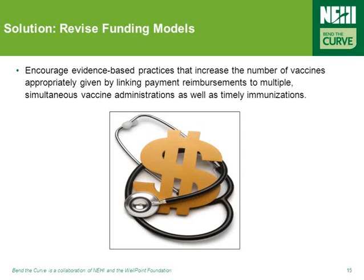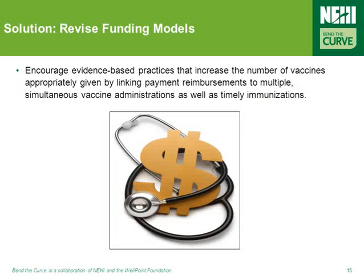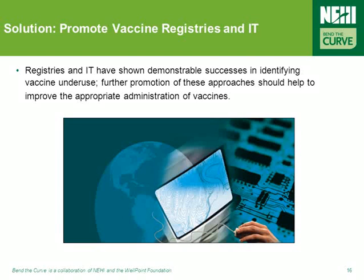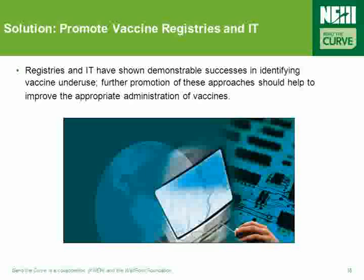Given the issue of inadequate reimbursement for healthcare providers for administering vaccines, it's clear that funding models must be revised to get providers more on board. One way is to encourage practices that increase the number of vaccinations by linking payment reimbursements to vaccine administration and timely immunization. Additionally, vaccine registries and information technologies have demonstrated success in identifying vaccine underuse, and further support of these approaches could help improve appropriate administration of vaccines across the board.